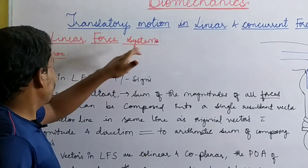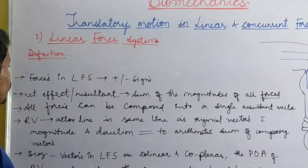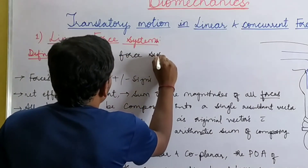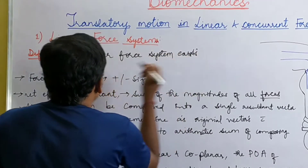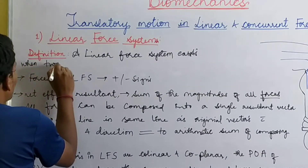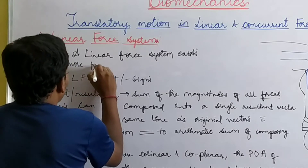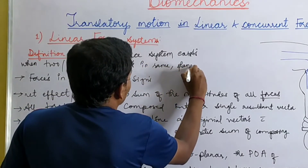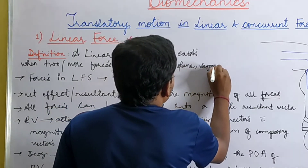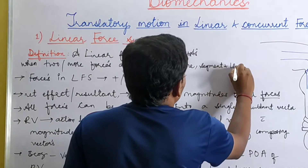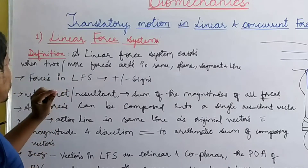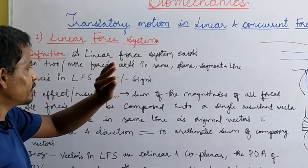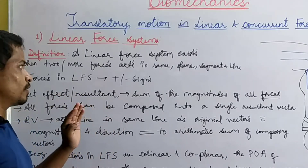Now let us see what is a linear force system. A linear force system exists when two or more forces act in the same plane, on the same segment, and in the same line. All three conditions must be met for a linear force system to exist.